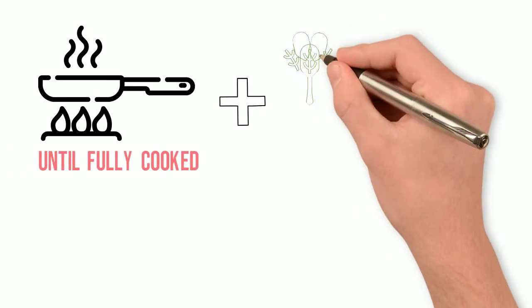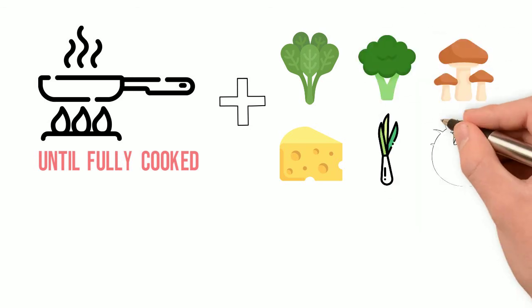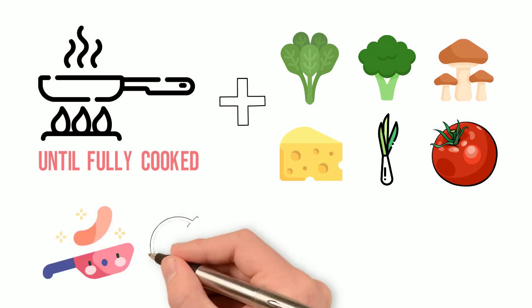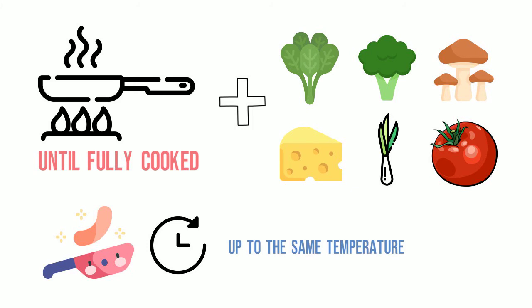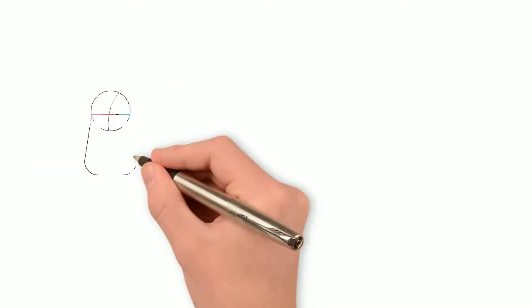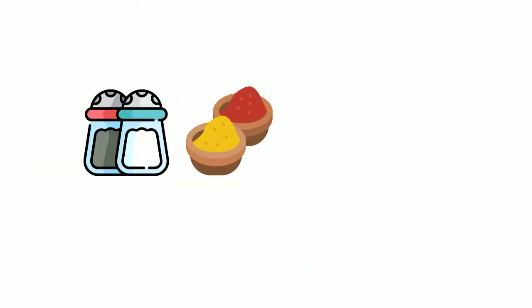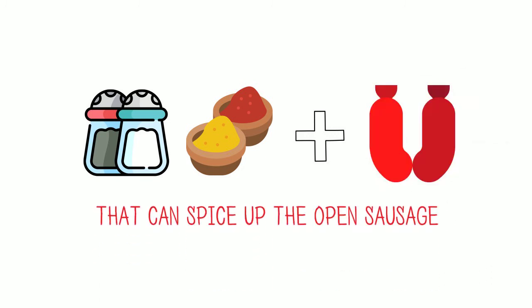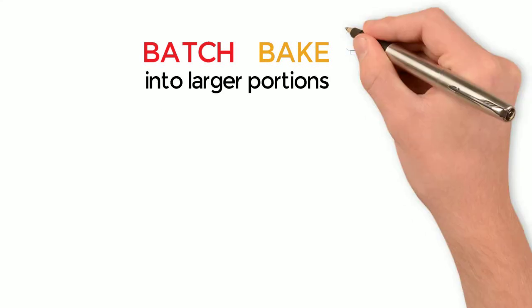You start by frying the meat until it's fully cooked, and then add one or more of the ingredients — spinach, cheese, broccoli, onion, mushroom or tomatoes — into the pan just at the time when the meat is fully cooked. Leave them cooking for a while to bring them up to the same temperature. Then you divide the mixture into sausage-sized portions. At that point I use black pepper, salt and spices to liven them up and give them some flavour. Similarly, I use chorizo as another ingredient that can spice up the keto sausage. If you batch or bake them into larger portions, you can also freeze them.